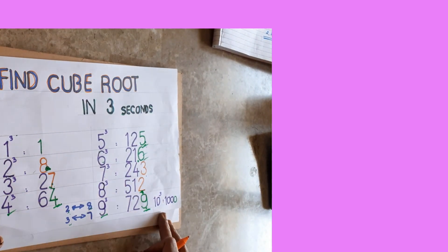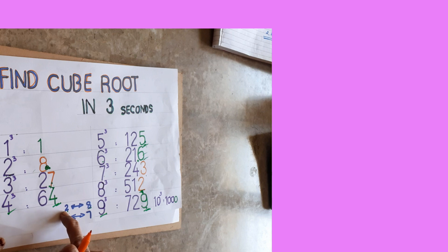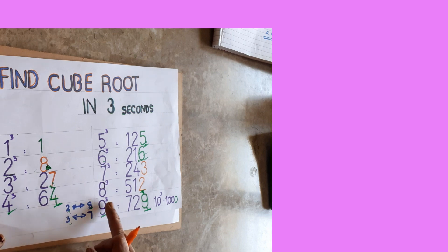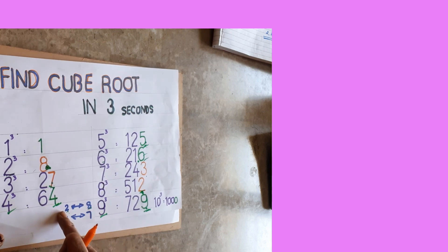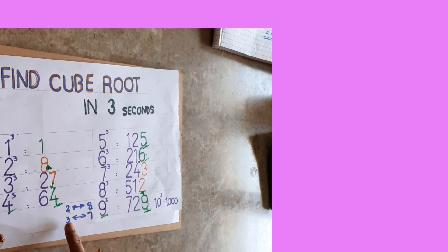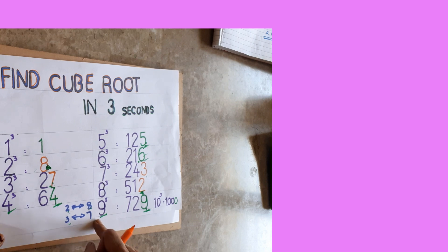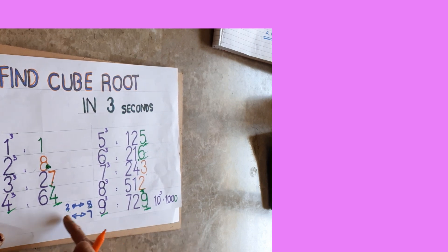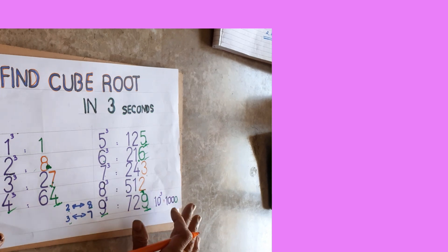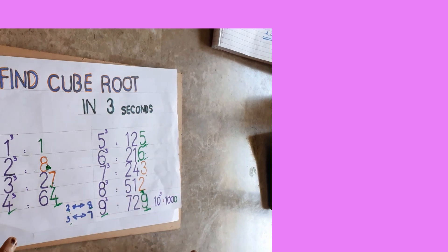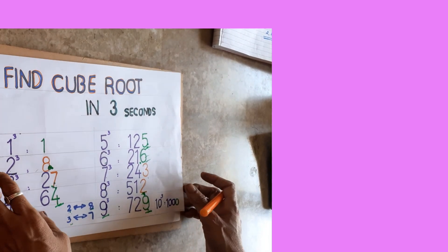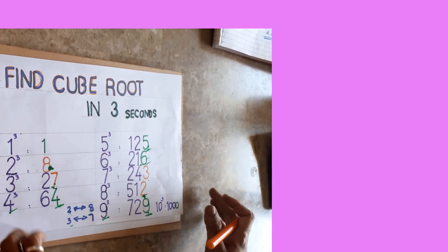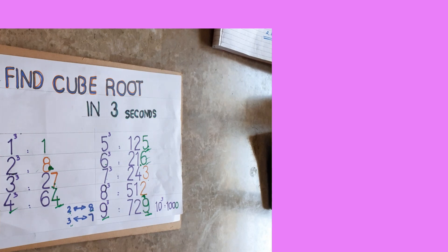It's very simple. Just remember 1 cube to 10 cube. If units place is 2 write 8, if 8 write 2; if 3 write 7, if 7 write 3. With this one concept you can do any sum. If you like my video, share, like, and subscribe. Thank you for watching — I will come back with another video.